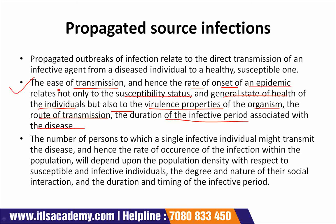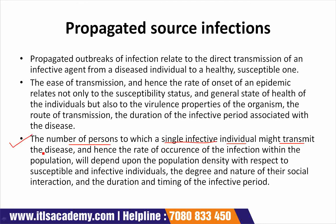In a propagated epidemic, one or more of the first wave of cases serves as a source of infection for subsequent cases, and those subsequent cases in turn serve as a source for later cases. The number of persons to which a single infective individual might transmit the disease depends upon population density with respect to susceptible and infective individuals, the degree and nature of their social interaction, and the duration and timing of the infective period.